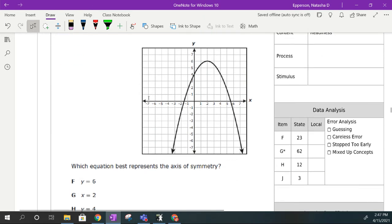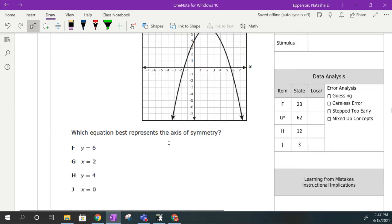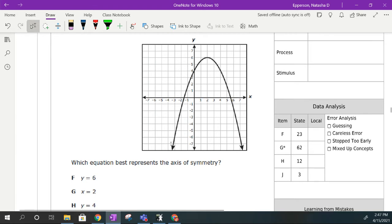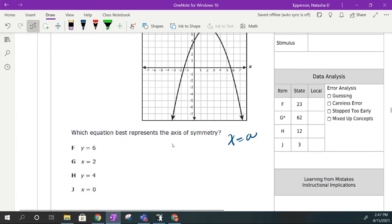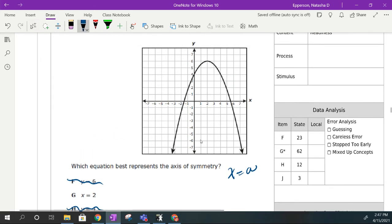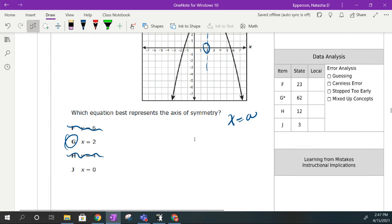Number 46, which of these best represents the axis of symmetry? Axis of symmetry is x is equal to a value. So I'm going to eliminate f and I'm going to eliminate j. And looking at my answer choice, it's over here. That is the x value. If I look at that x value there, that is 2. So that gives me g is my answer.